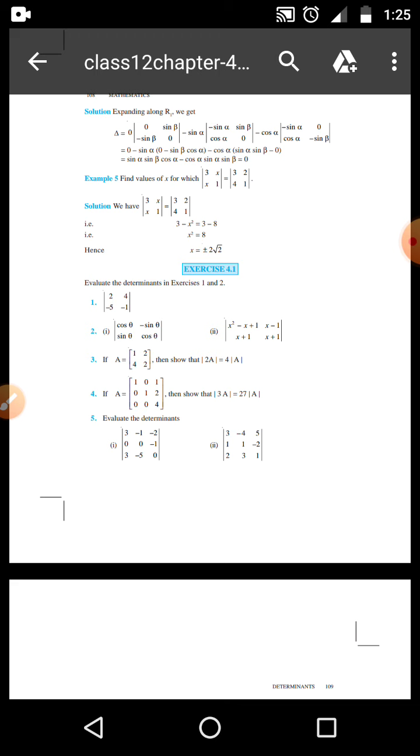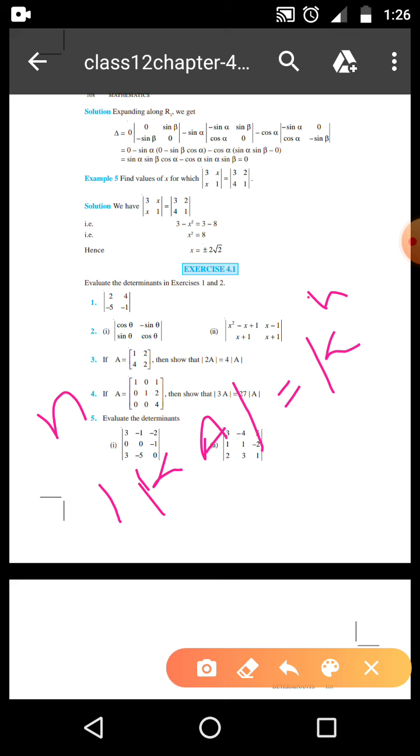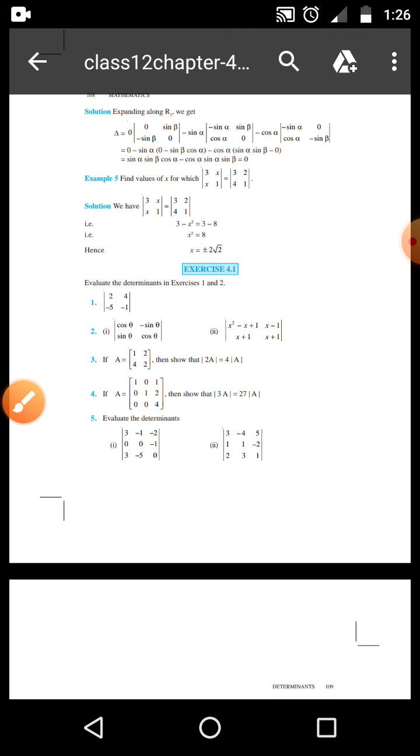Okay, so we already discussed a formula also. That if order of matrix is n, then determinant of kA is k to the power n times determinant of A. Order of 3, that is 3 to the power 3, 27A. So this is a formula also. So this particular formula we shall use here.